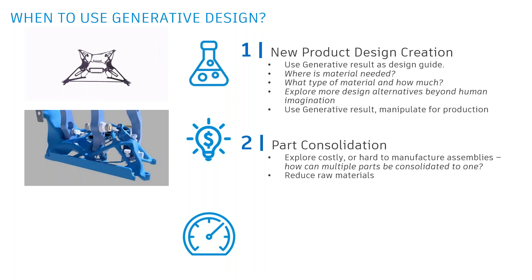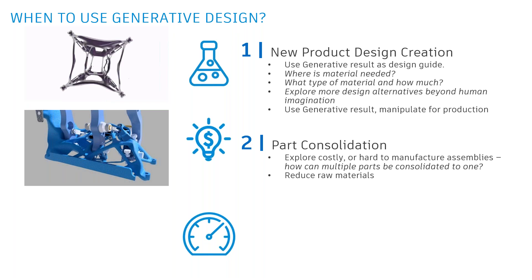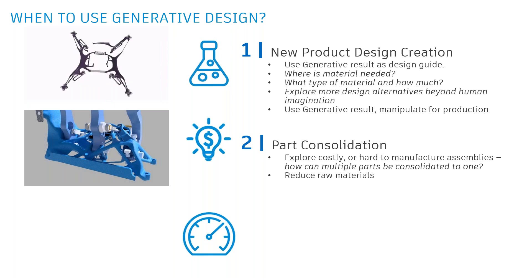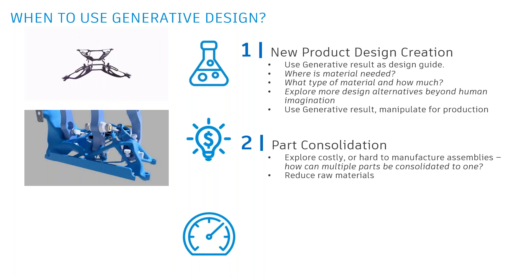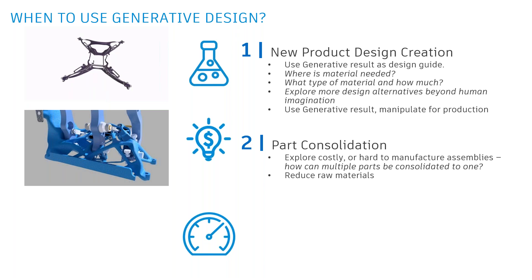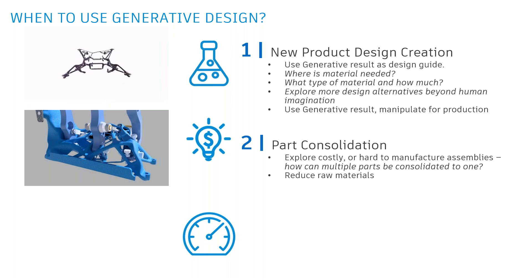Part consolidation is another use case, as with the General Motors seat belt bracket. If you have assemblies with pain points — costly, hard to manufacture, many assembly steps, spot welding, secondary processes — generative design can take that assembly and reduce it, or portions of it, down to a single component, which certainly helps streamline your process.